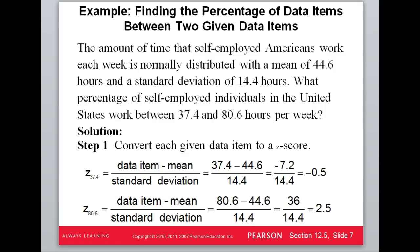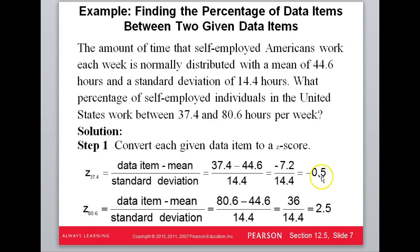Now let's look at an example where we find a percent between two numbers. The amount of time a self-employed American works in a week has a mean of 44.6 hours and a standard deviation of 14.4 hours. What percent of self-employed individuals work between 37.4 and 80.6 hours? We need to find two z-scores. For 37.4: plug into the z-score formula, subtract the mean, divide by the standard deviation. Remember, it's always the data item minus the mean — never flip it — so we can see if it's below or above the mean. The two z-scores are negative 0.5 and 2.5.